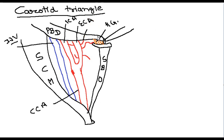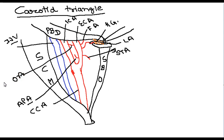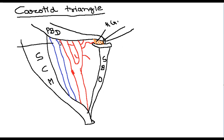The external carotid artery gives some branches in the carotid triangle — some from the anterior, some from the posterior, and one from the medial part. These branches are: the facial artery supplying the face, the superior thyroid artery supplying the thyroid gland, the lingual artery supplying the tongue, the ascending pharyngeal artery from the middle part, and the occipital artery from the posterior part.